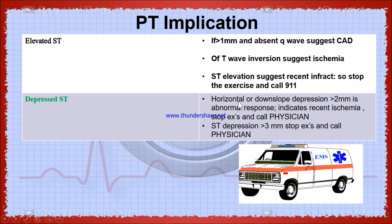If there is an inverted T wave, as we know it indicates ischemia and we cannot continue exercise. If the patient is having horizontal downslope greater than 2 mm, it is always an abnormal response — we need to stop the exercise, refer to the physician, or call the physician and call 911 to let them go to the hospital. Because if there is greater than 3 mm depression, there will surely be a major infarcted area.